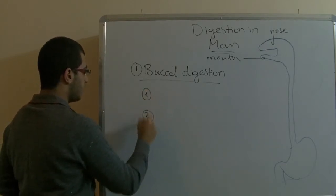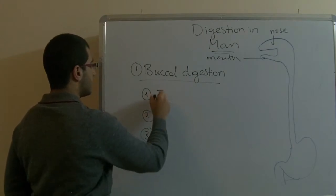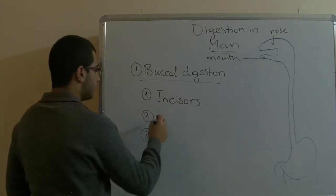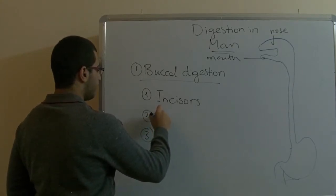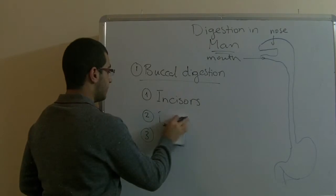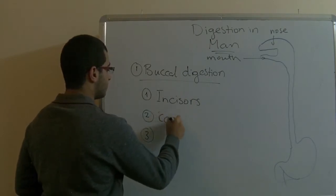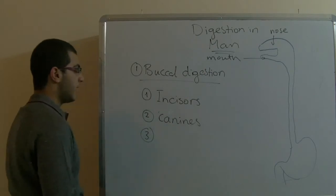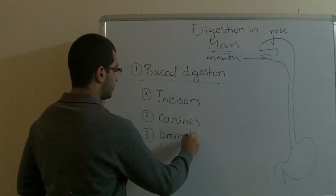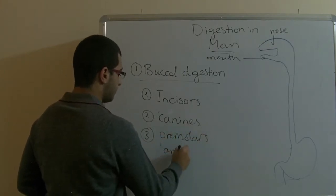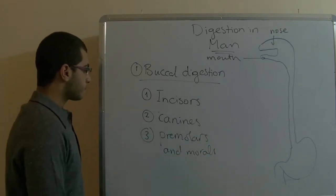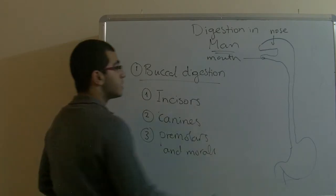When the food enters the mouth, we cut the food with our teeth. The teeth are differentiated into three groups: first, the incisors to cut the food; then the canines to tear down the food; and then we have the premolars and molars to crush down the food.